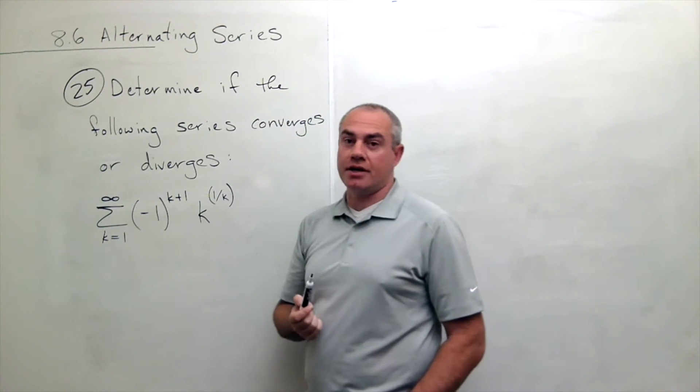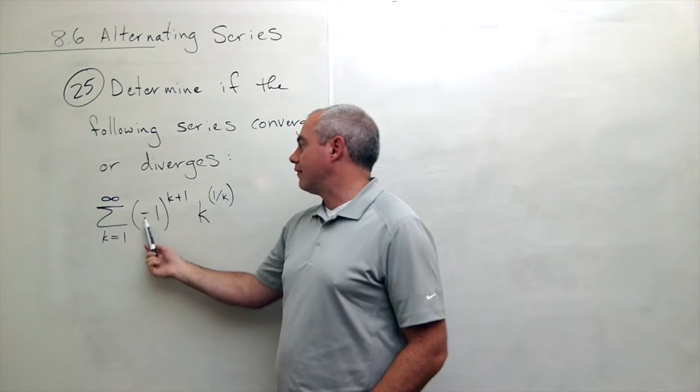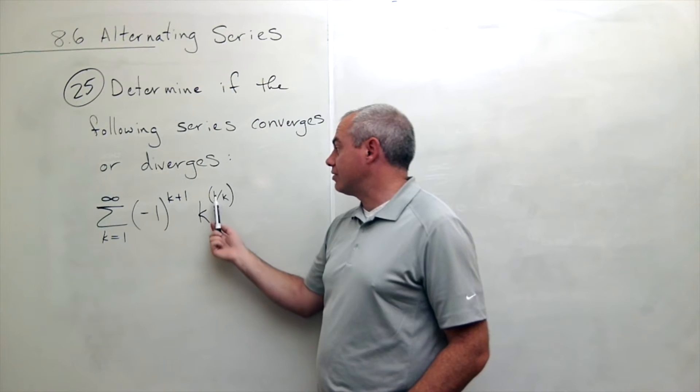And here we have another alternating series. We have the sum k going from 1 to infinity of negative 1 to the k plus 1 times k to the 1 over k.